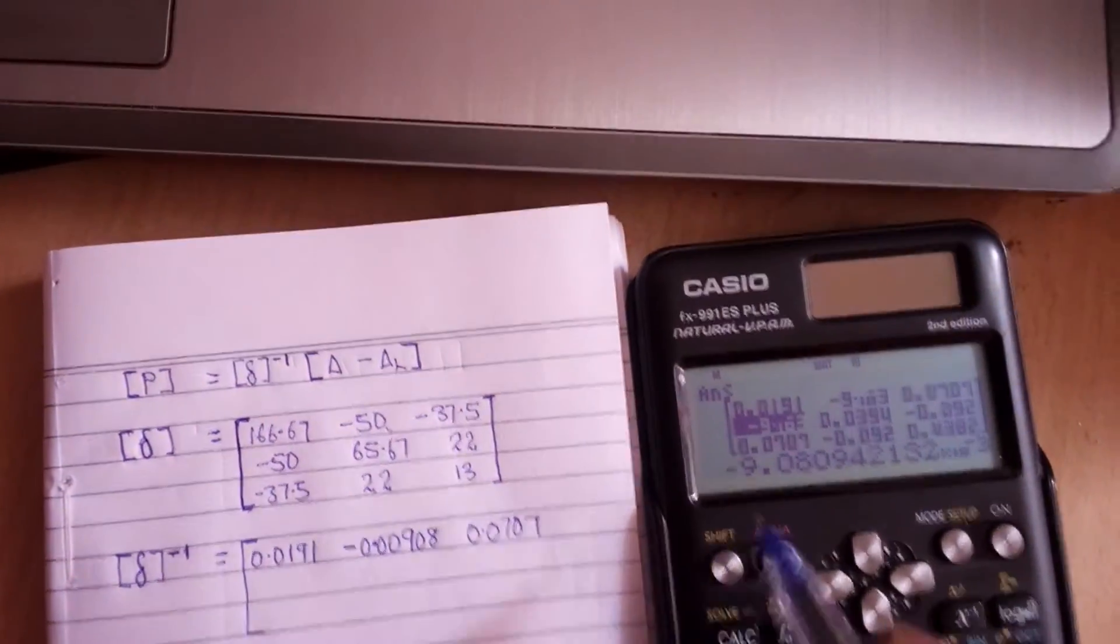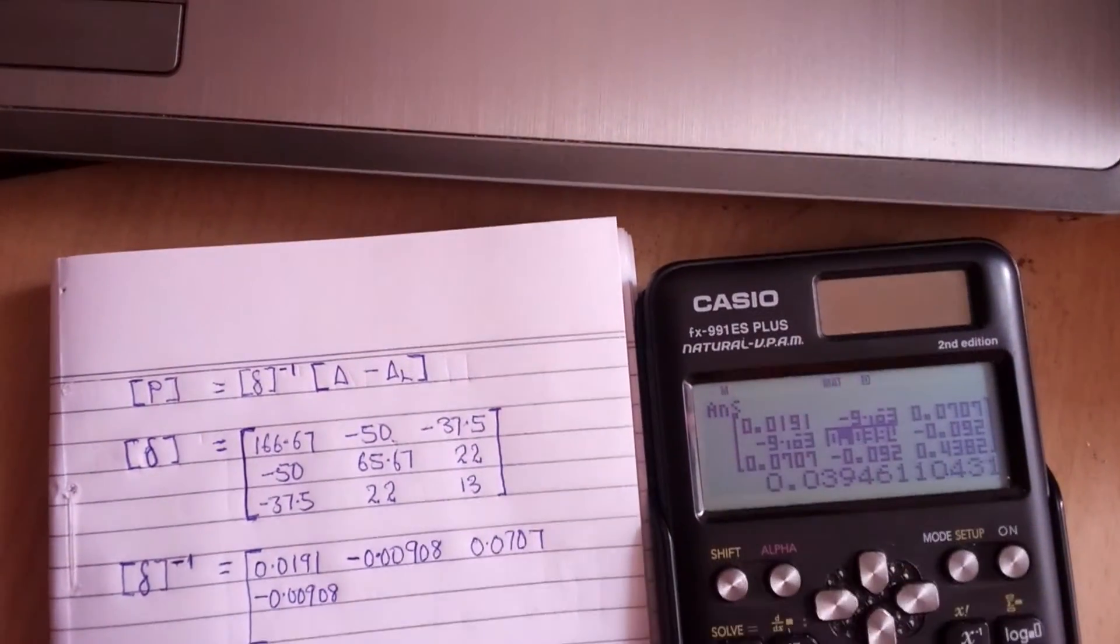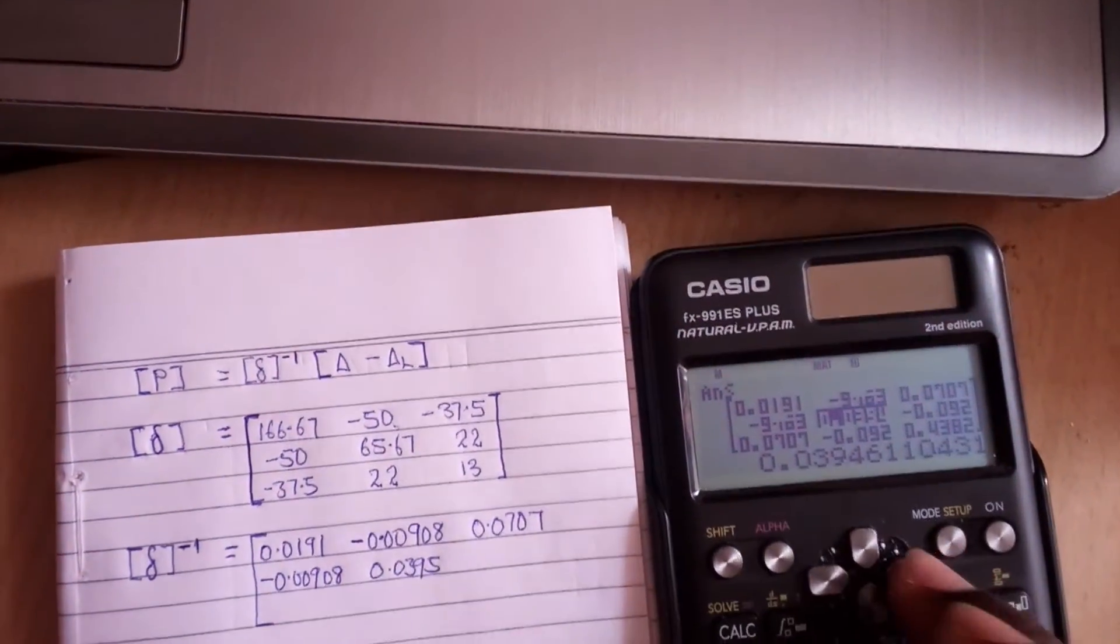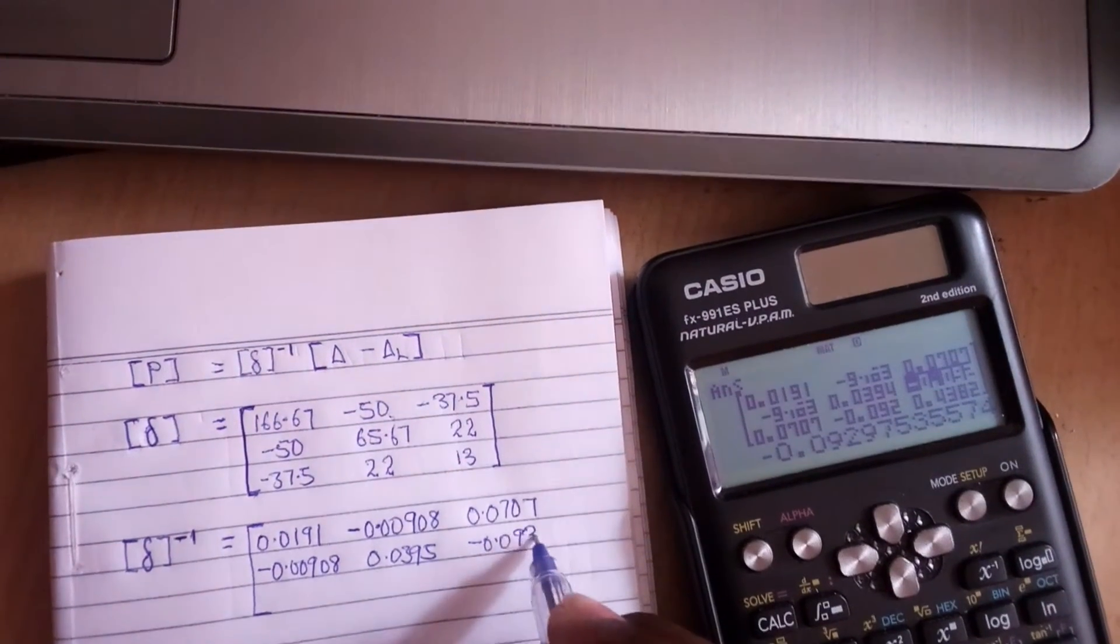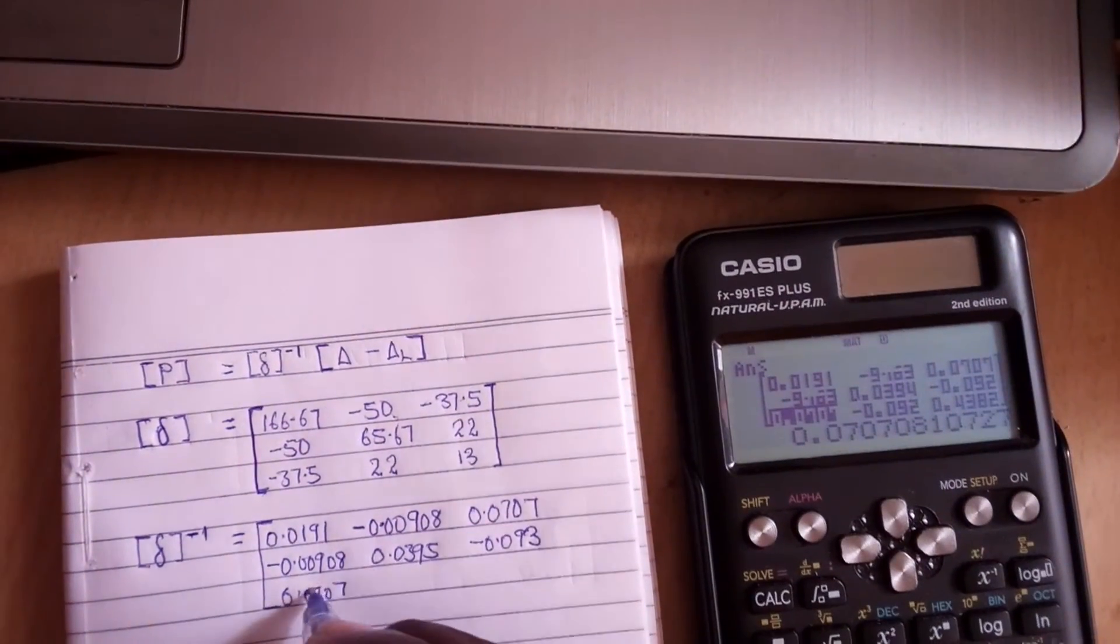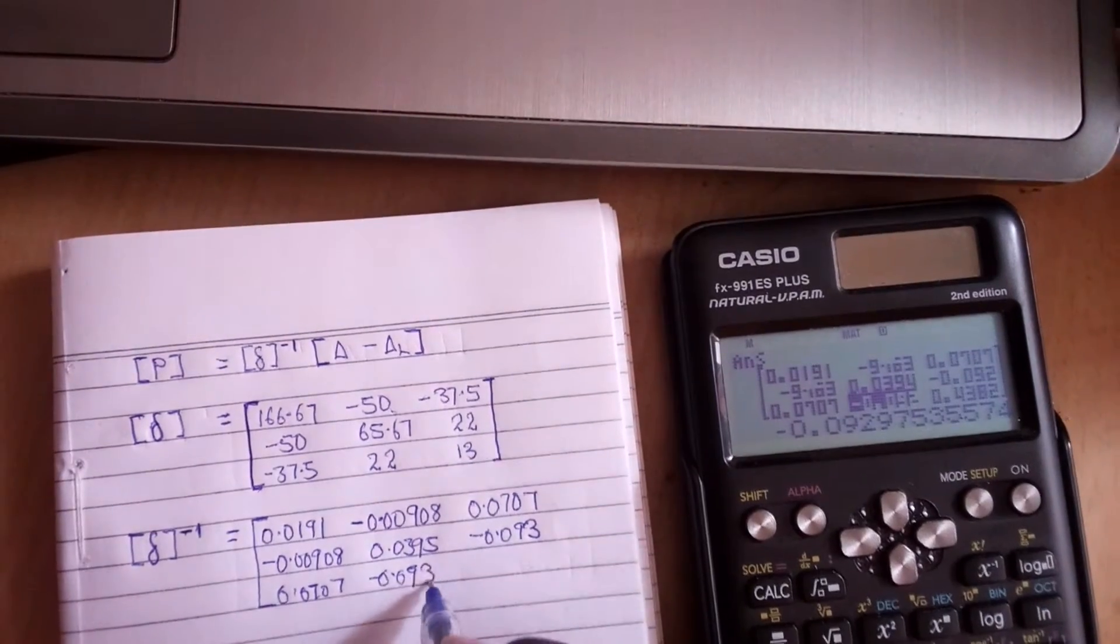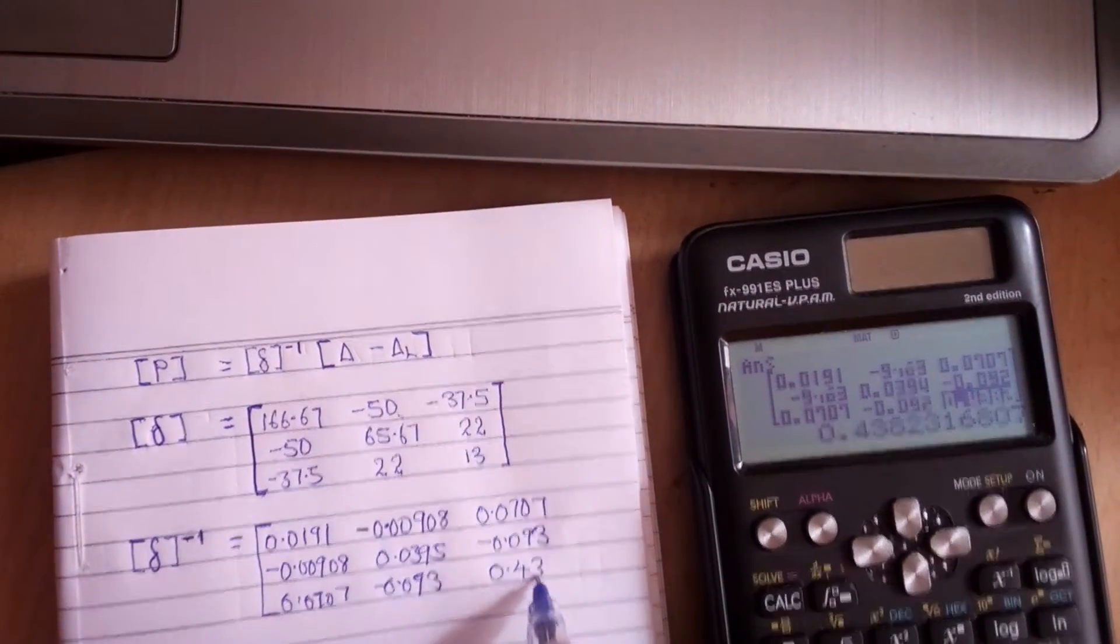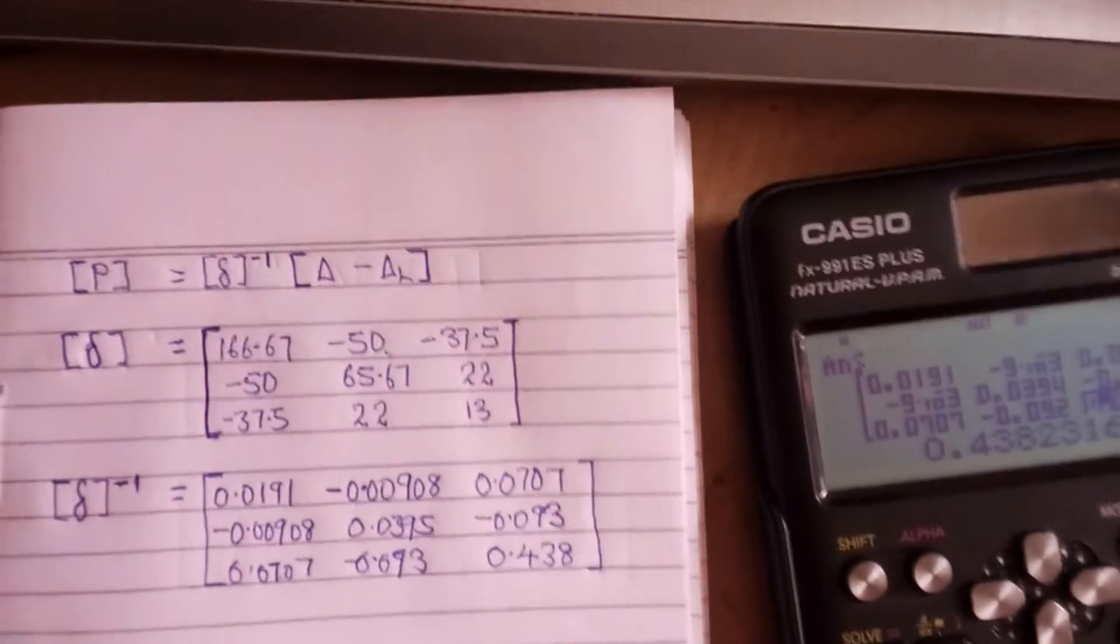Next one, same, you can see times 10 to the power minus 3, you have to be careful. It's going to be minus 0.00908. Next one, 0.0395. Next one, minus 0.093. And the last one, 0.438.